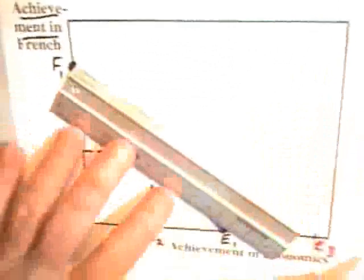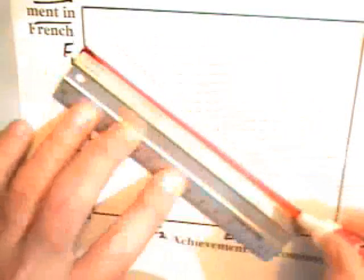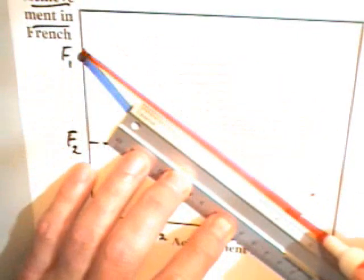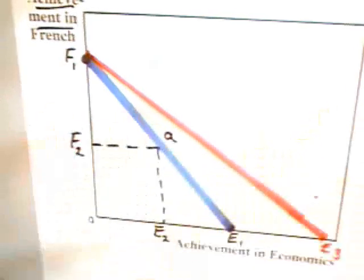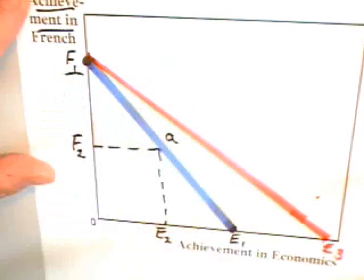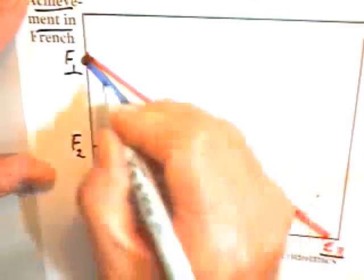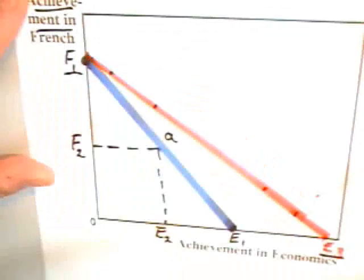This means that the student can indeed move from the blue curve to a curve that looks like the red line. That is, the student can move to any point on the red line. The student can still choose F1, but he or she can now choose at a maximum E3 or any point on this new higher curve.